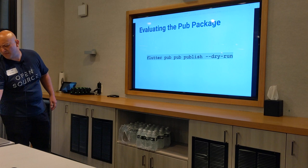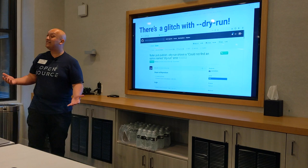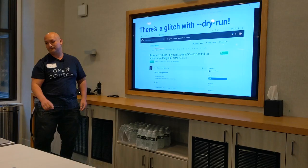You might have noticed something odd about that shell command — it looks like a typo. There's a reason for that: there's a glitch with dry run. This is an actual ticket on the Flutter team's GitHub. Someone tried to build it and it was breaking, and then someone discovered that writing 'pub pub' made it work. In the past you didn't need that extra pub, and in the future you likely won't, but as of today you do. So if you go to a tutorial that tells you a different command and it's not working — this is why.